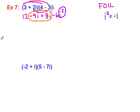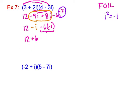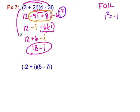After replacing i squared with negative 1: I have 12, collecting the imaginary terms gives negative 1i, and negative 6 times negative 1 becomes positive 6. So I have 12 plus 6 for the real part, giving 18, and the imaginary part is negative i. The result is 18 minus i — a real part and an imaginary part.